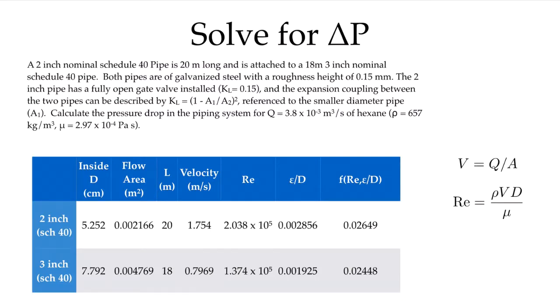Let's carry on with our problem. The first thing we're going to have to do is look up the definition of a schedule 40 nominal 2 inch and nominal 3 inch. These are standard definitions. What we're looking for is the inside diameter for a schedule 40 pipe. A nominal 2 inch schedule 40 pipe has a diameter of 5.252 centimeters, while a 3 inch has an inside diameter of 7.792 centimeters.